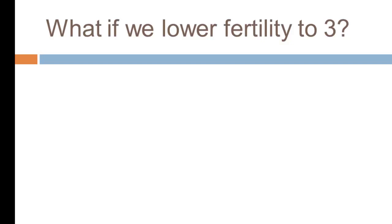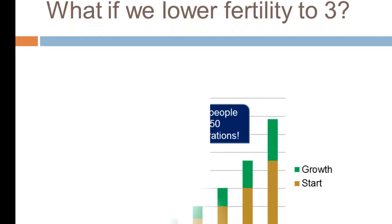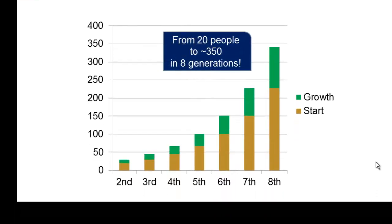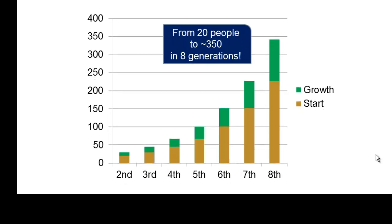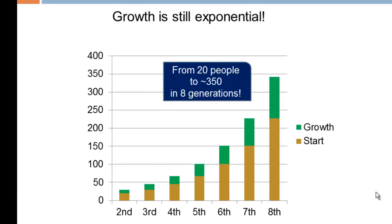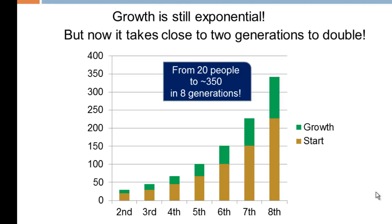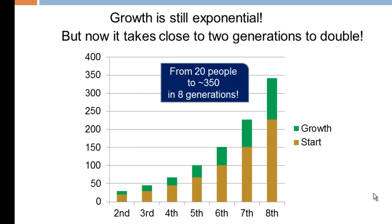If we push the fertility rate down to three, that does slow things down. Over eight generations we go from 20 people to roughly 350, which scaled up means going from about 8 million to 350 million in 200 years — actually pretty similar to the population growth of the United States over the last two centuries.